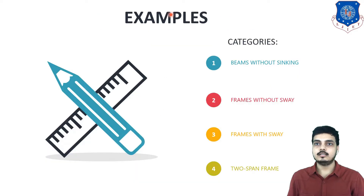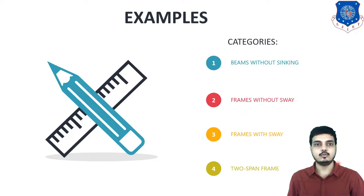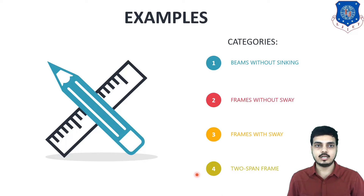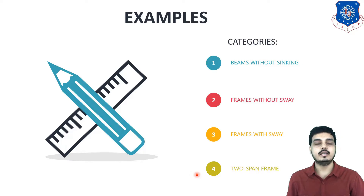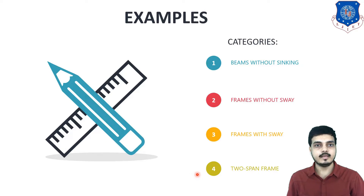There are some categories of examples: beams without sinking, frames without sway, frames with sway, and two-span frames. We have already learned the beam using the moment distribution method in the previous session of structural analysis. In this session we will be considering frames only, but before starting we will take one beam example for reference. So let's start our first example.